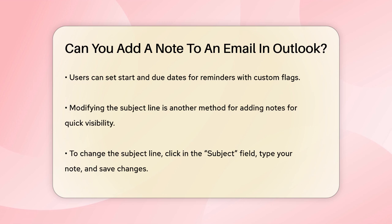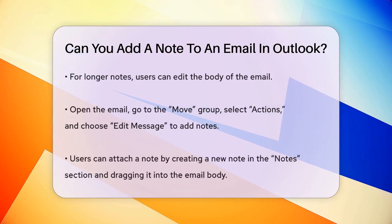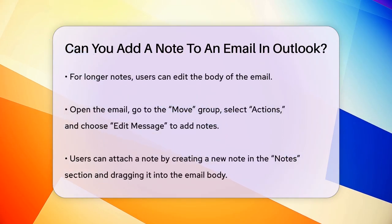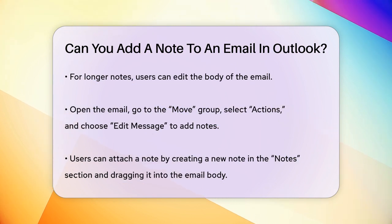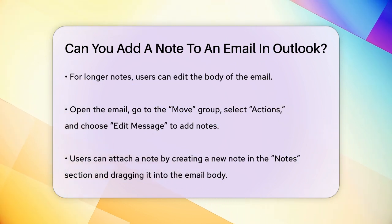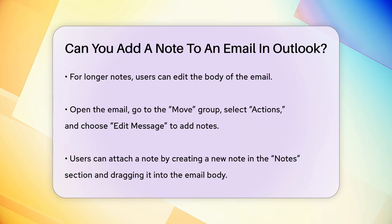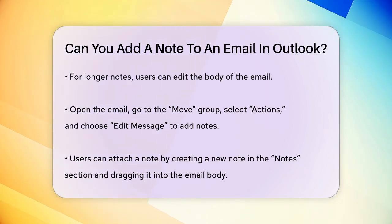If you have a longer note, you might want to modify the body of the message. Open the email, go to the Move group, select Actions, and choose Edit Message. Place your cursor where you want to add the note and type it in. Close the email and save the changes. This way, the note will be part of the email body whenever you view it.